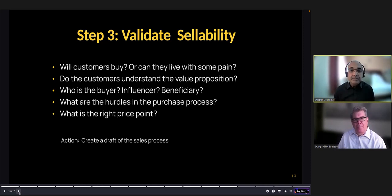Specifically in this step, will customers buy or can they live with some pain? Do the customer understand the value proposition? You also have to know who is the buyer, who is the influencer, who is the beneficiary. Let's say you build some AI product, like a smart watch for teenagers or kids. Are they the buyers? No, the parents are the buyers. So you have to actually convince the buyers that this watch is going to help homework for your teenager. So you have to understand who is the buyer, who is the influencer, who is the beneficiary. What are the hurdles in the purchase process? Remember that iPhone thing? It's so easy to buy an iPhone.